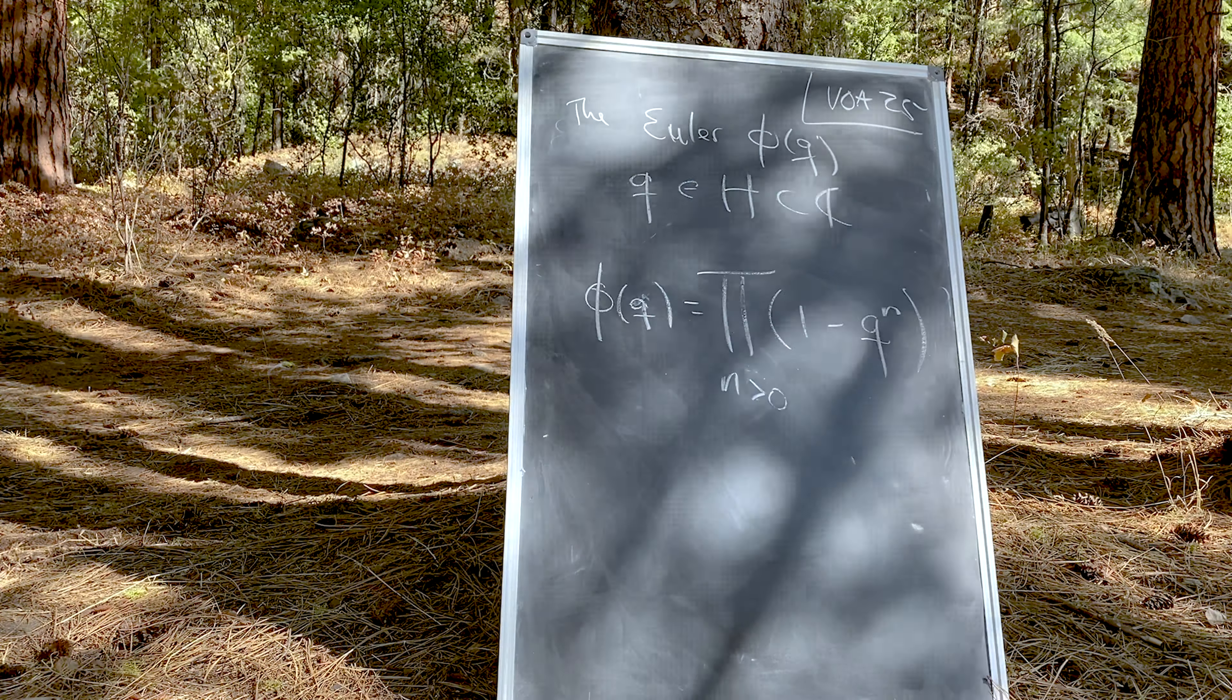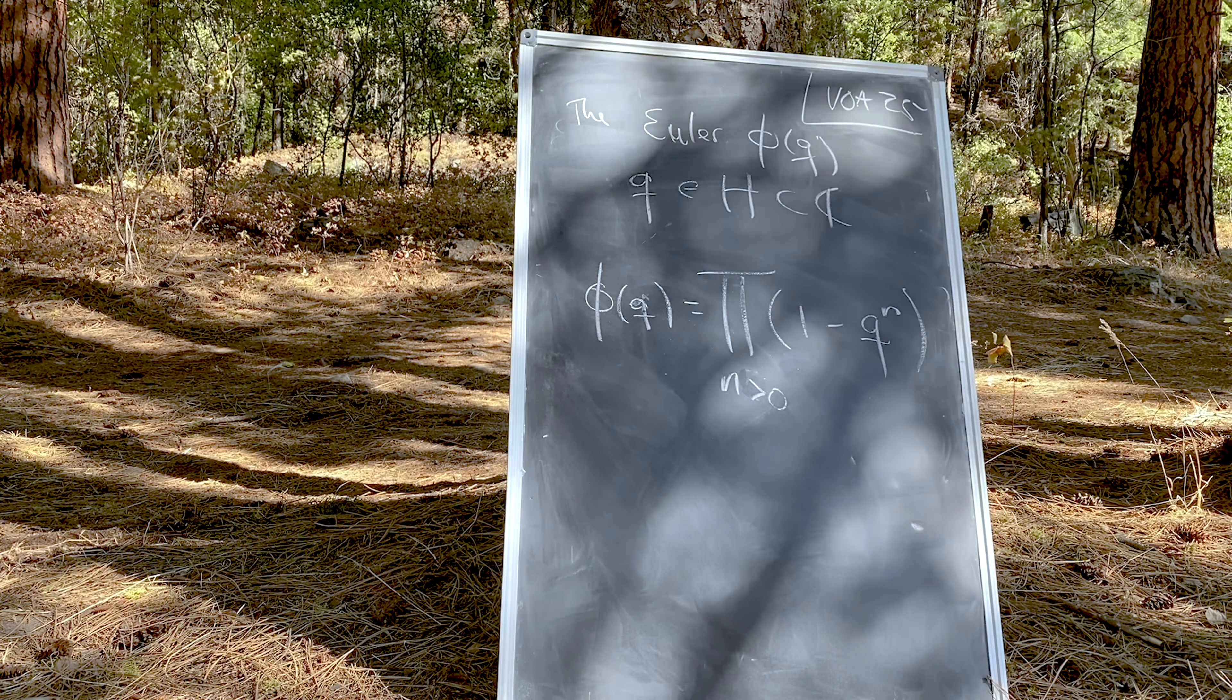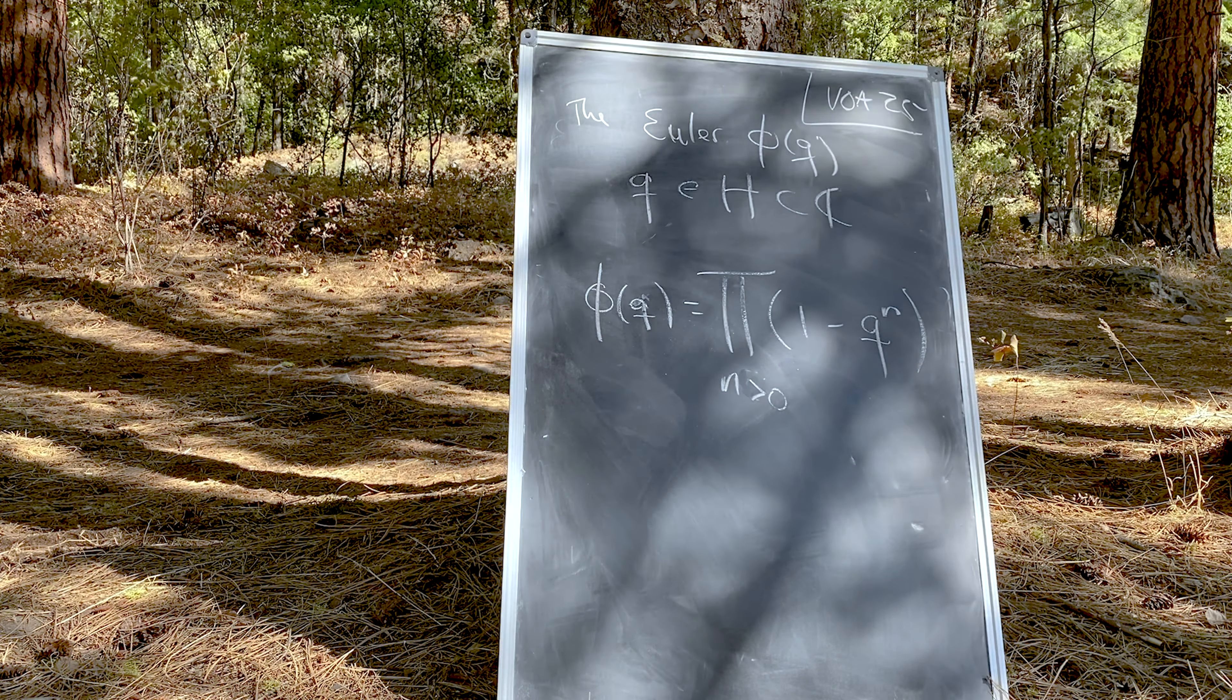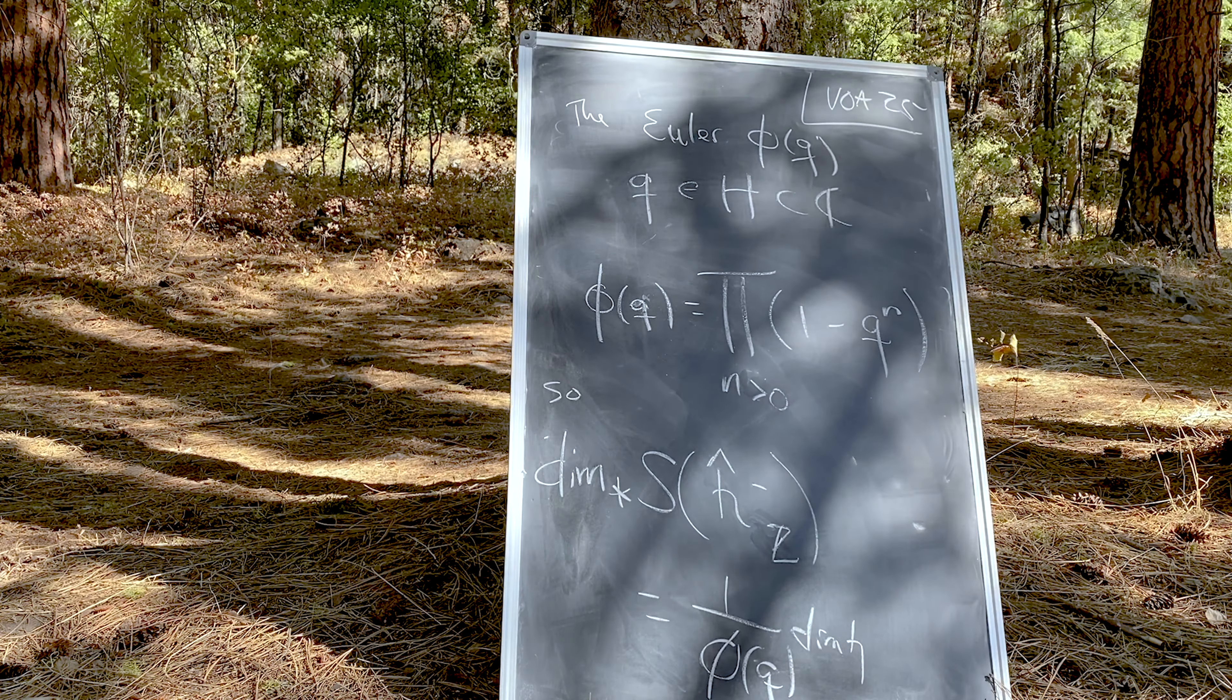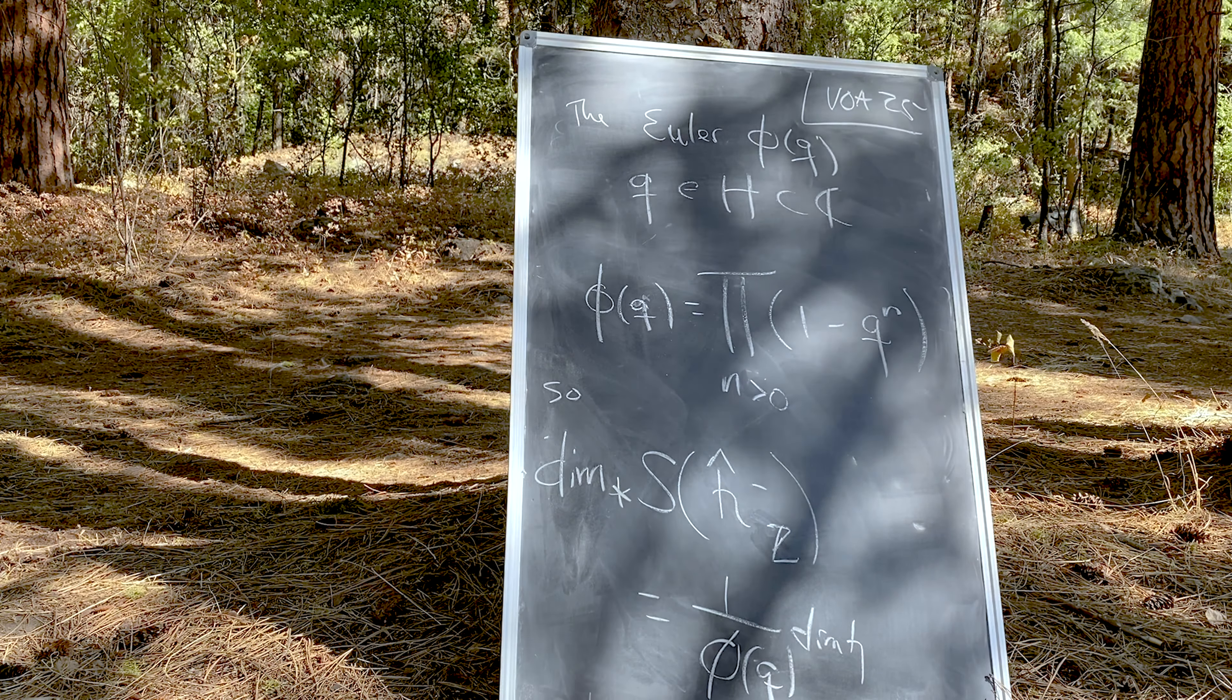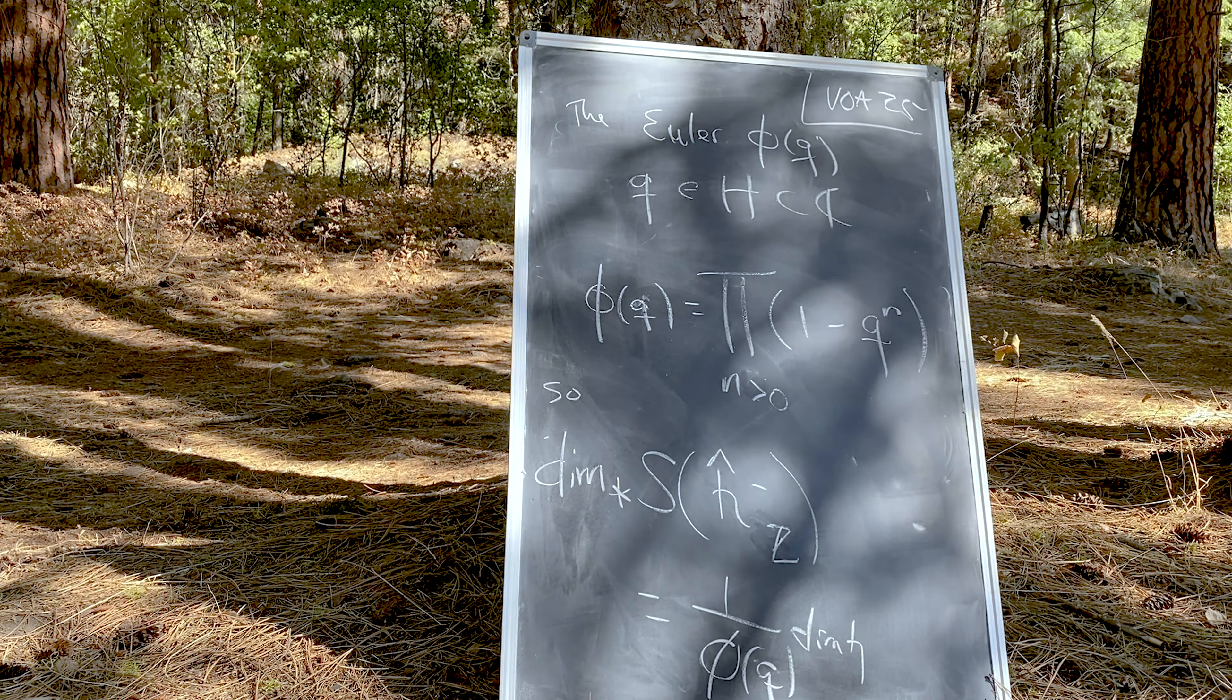The result might shock you, or at least it should. Inspecting our graded dimension of Heisenberg modules, we see Euler's totient function staring at us in the face. Well, actually, Euler's phi is defined on whole numbers, counting the number of positive integers relatively prime to the argument, but this form is also intimately related to something else that is defined on the complex upper half plane.